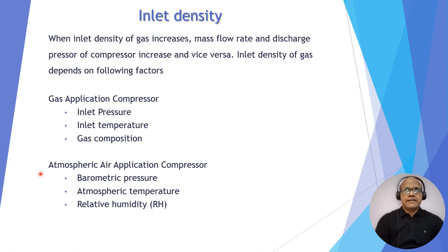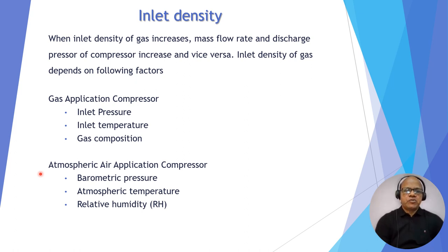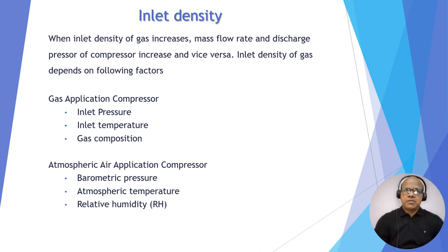Atmospheric temperature: higher atmospheric temperature means lower inlet density. Lower atmospheric temperature means higher density. At higher altitude, barometric pressure will be less, so density will be lesser. Relative humidity: higher RH value means more moisture present in dry air, which is not good. Lower relative humidity means higher density and better compressor performance.